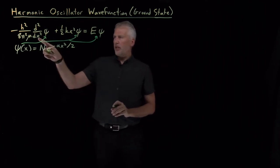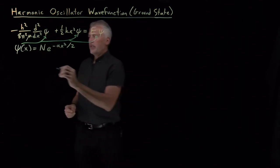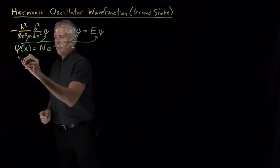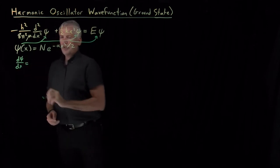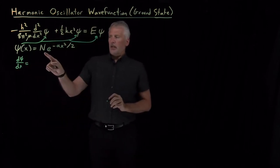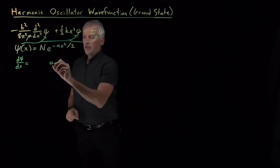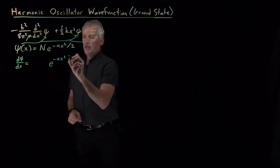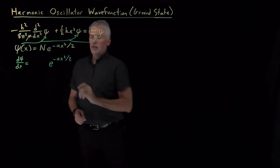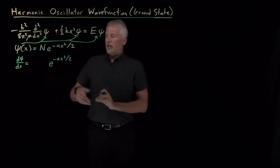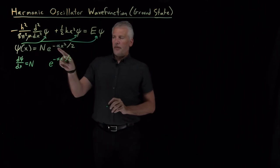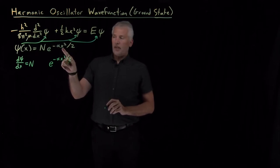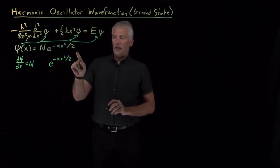So to do that, we need derivatives. We'll take the derivatives of this function — the first derivative of the wave function. The derivative of an exponential is an exponential, times the same constant out front, times the derivative of the exponent. So the derivative of x squared is 2x, and we have a negative alpha and a divided by 2.